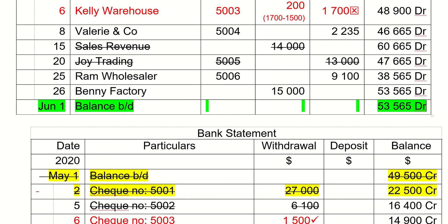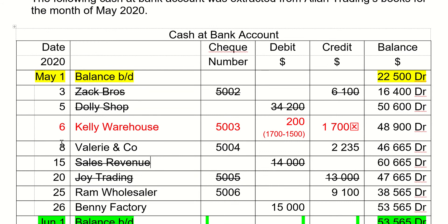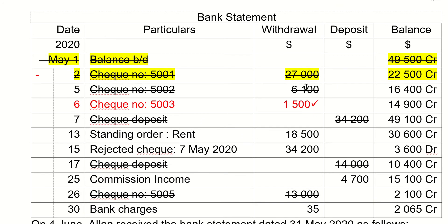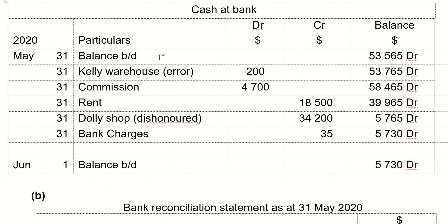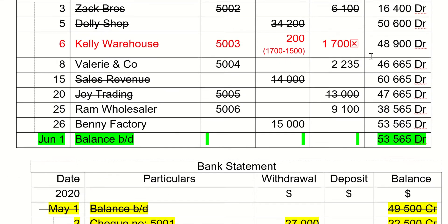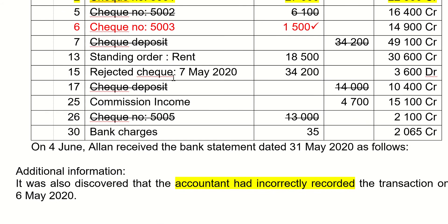We need to decide which transactions to update in the cash at bank account. You should update the bank statement numbers that have not been cancelled away — not the unticked cash at bank numbers. The balance brought down comes from the cash at bank account: that 53,565 in green. There are only four items to update from the bank statement.